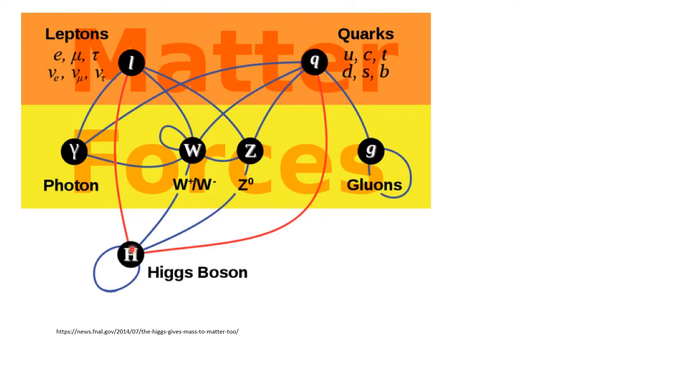When Peter Higgs and others hypothesized the existence of the Higgs field and the Higgs boson, from the known masses of the W and Z particles, the electron and so on,